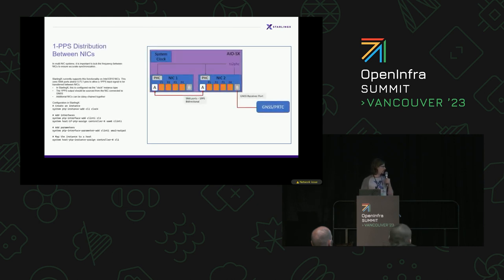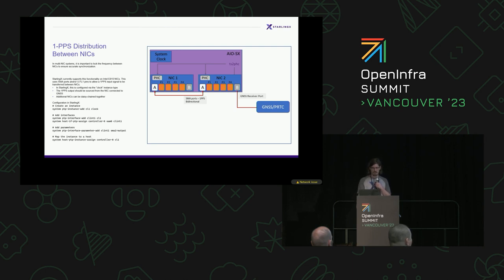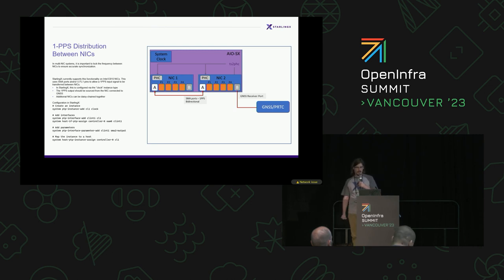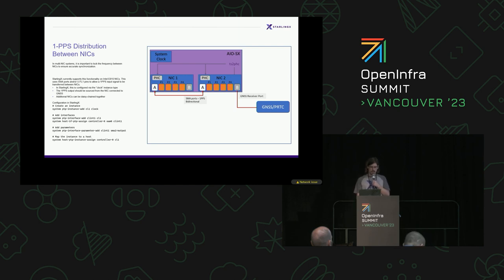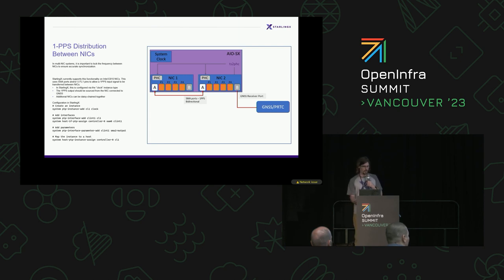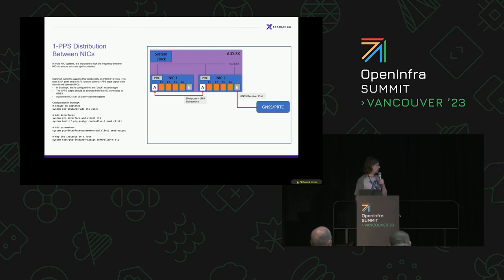Now that we've got timestamps coming in from GPS, the physical hardware clocks on each NIC are synced to that — reading the same time as the GNSS signal. The next thing we want to do is frequency lock those NICs together. In this example, an Intel E810 NIC is one of the types of hardware that supports this. They have SMA ports that can be connected from one NIC to another, and you can daisy chain them across multiple NICs. In StarlingX, you configure a clock instance type that allows you to transmit a one pulse per second signal from NIC 2 over to NIC 1, making sure the PHCs on each NIC are ticking at exactly the same frequency and locked in with each other.